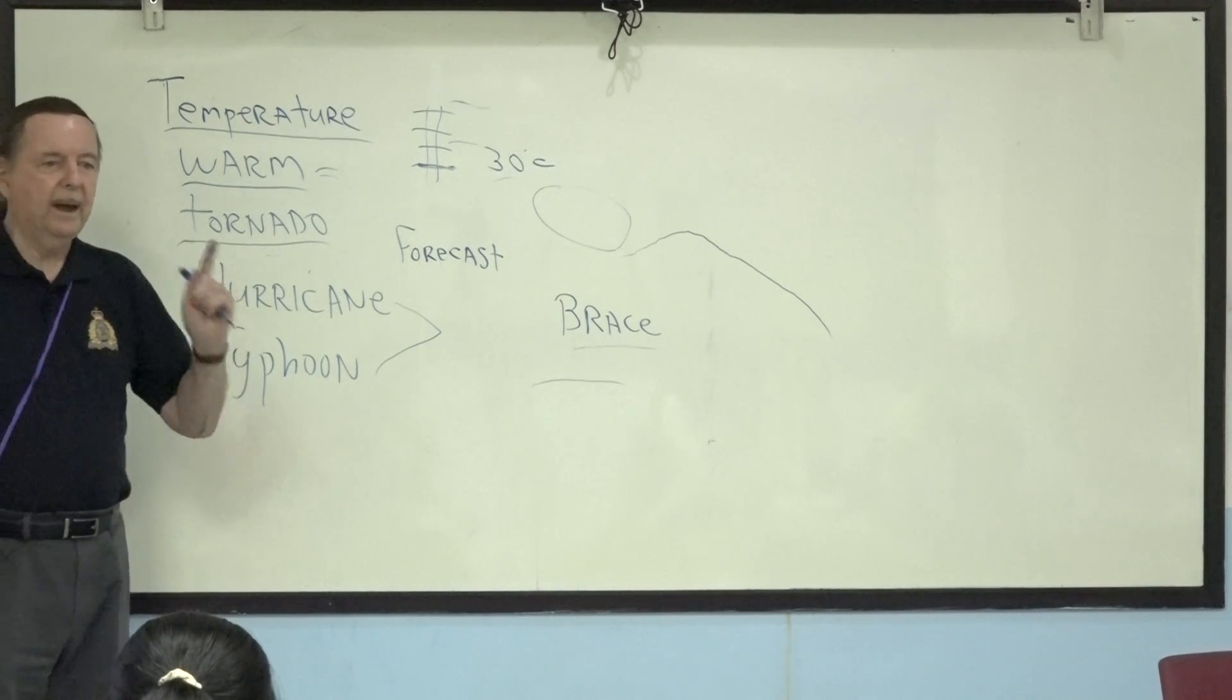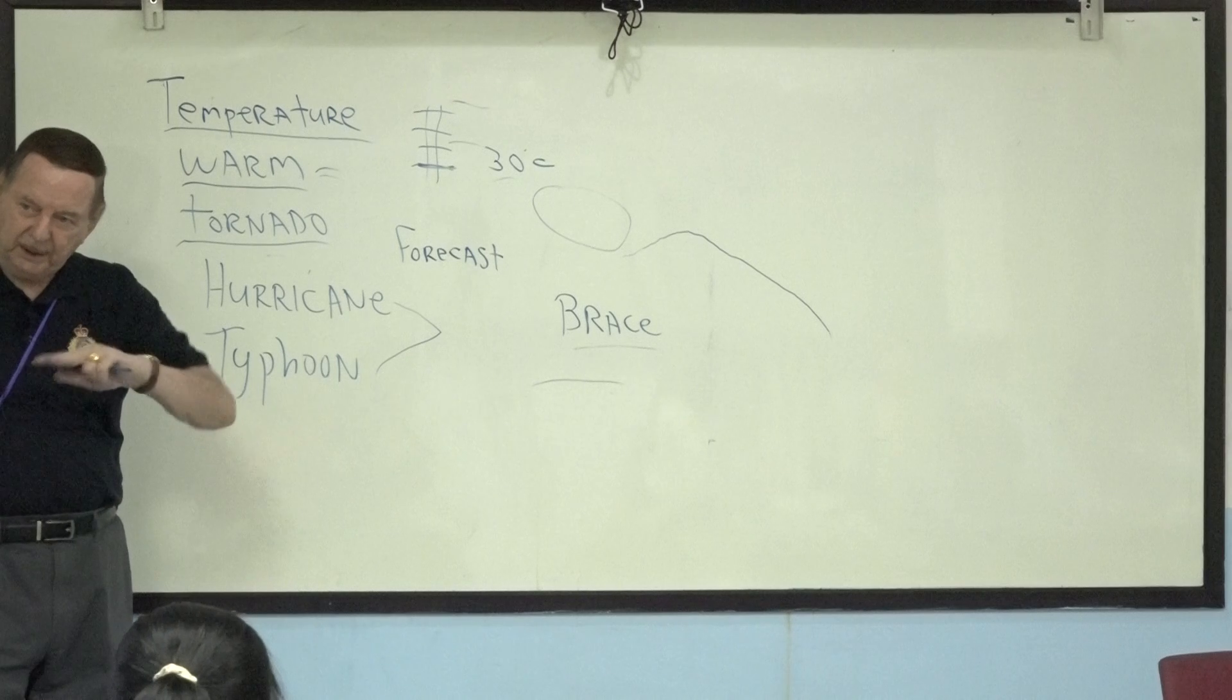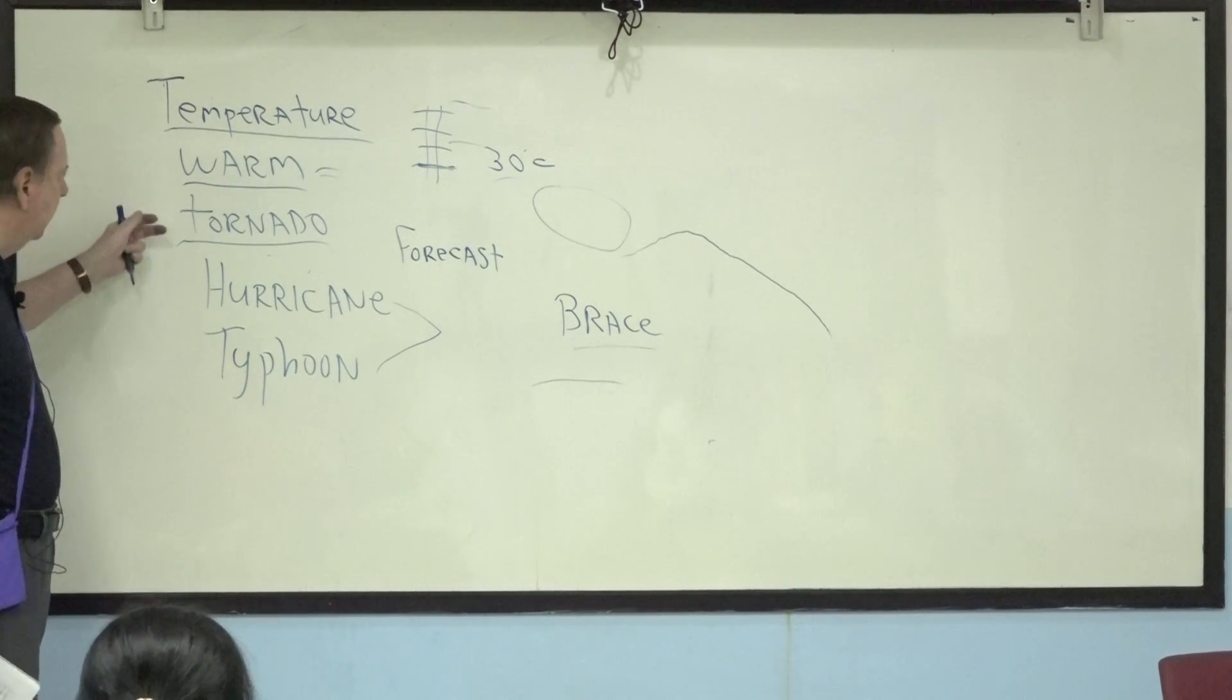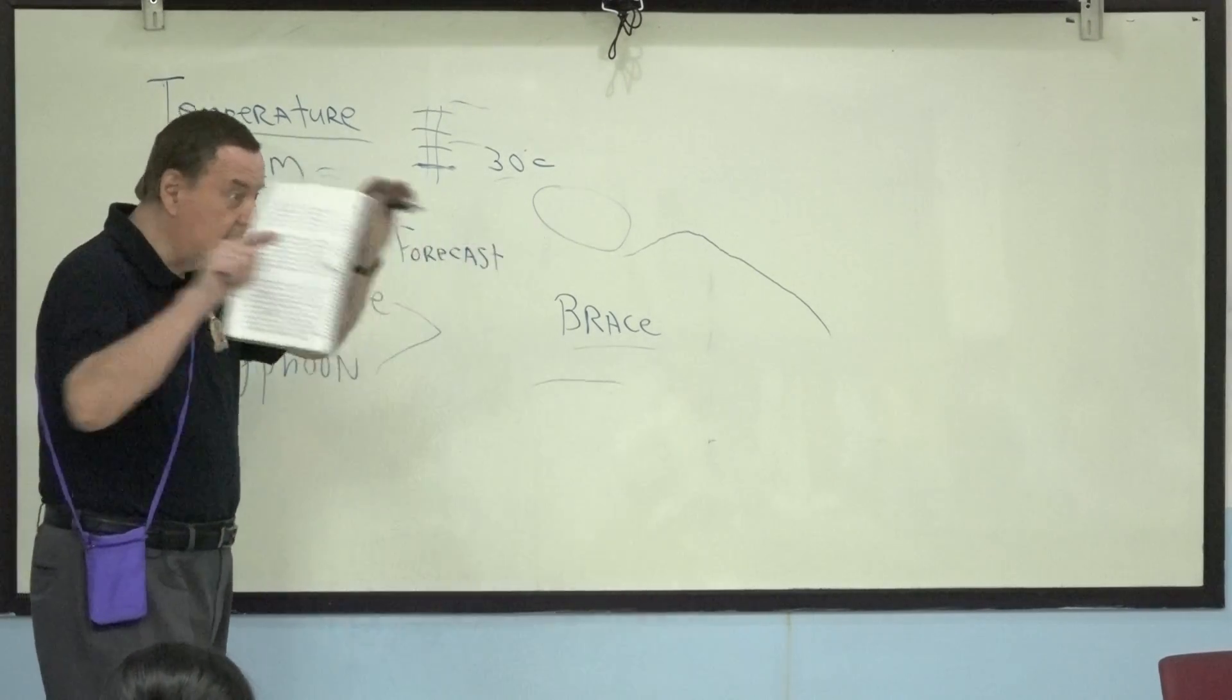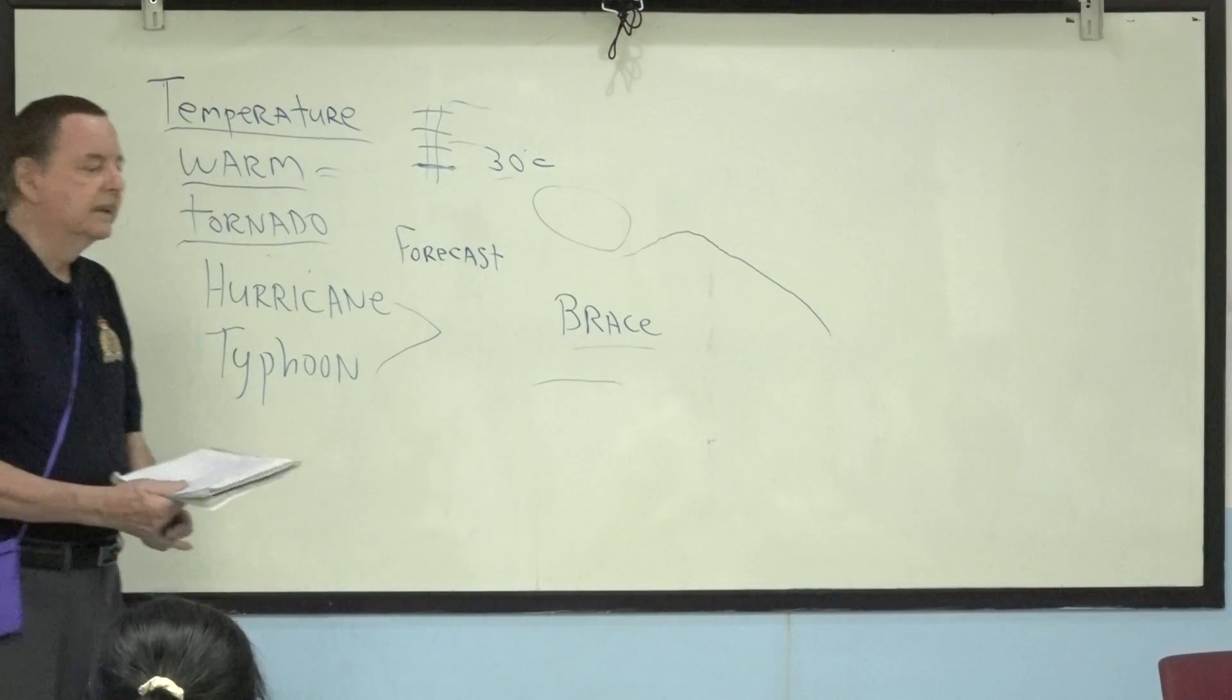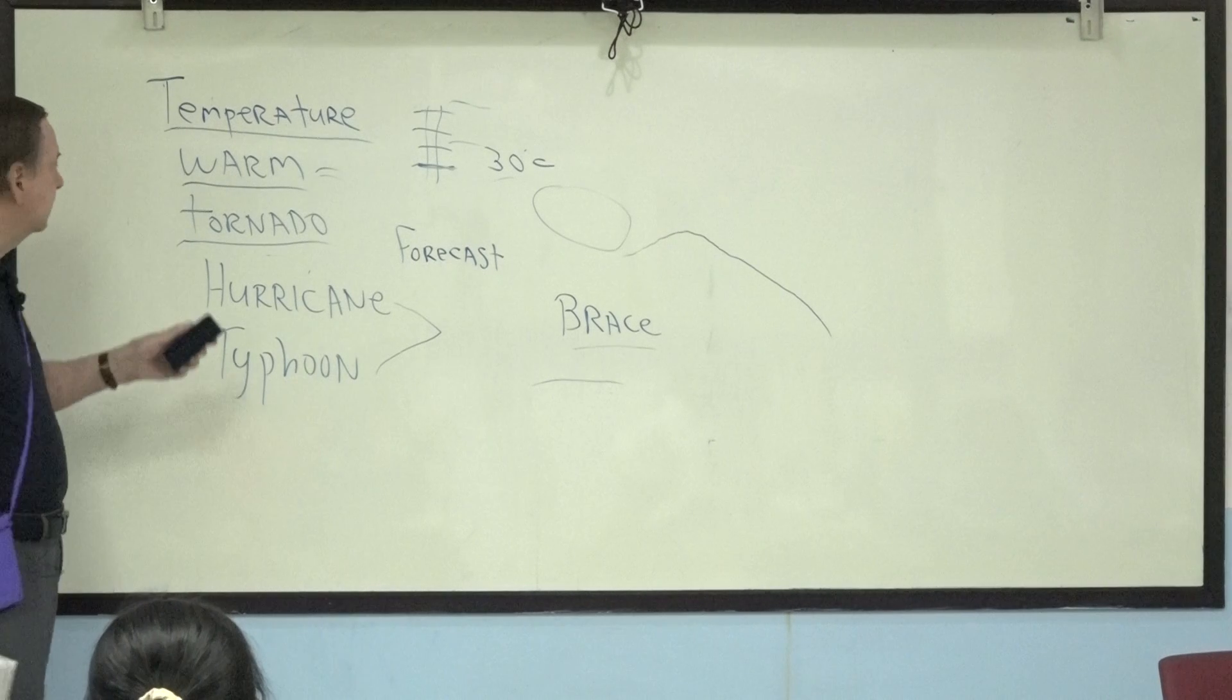The forecast calls for rain this afternoon at five o'clock. Or six. Temperature warm. Tornado. Rolling, twirling wind. Hurricane. Strong wind. Typhoon. Strong wind. Rushing toward the coast. As is happening right now in the Philippines and the east coast of the United States.